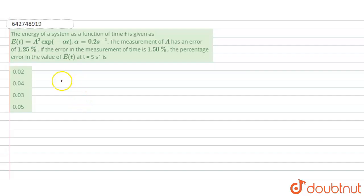Hello, the question here is: The energy of a system as a function of time t is given as E(t) = A² exp(-αt), where α = 0.2 per second. The measurement of A has an error of 1.25 percent.